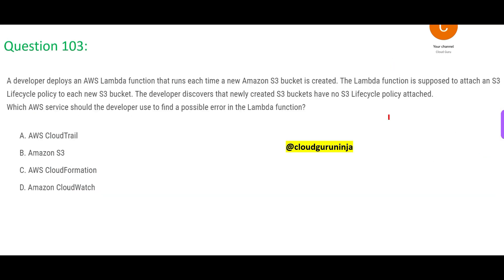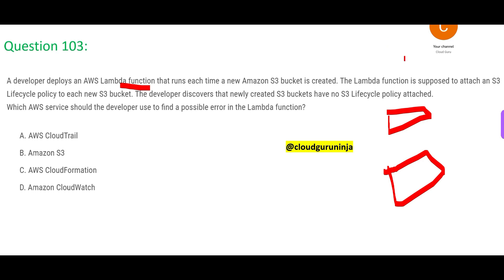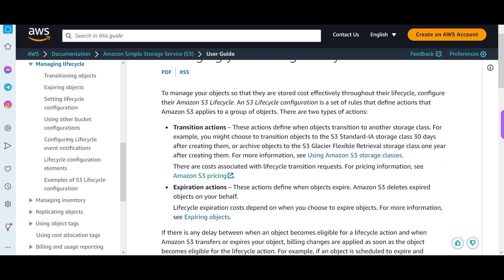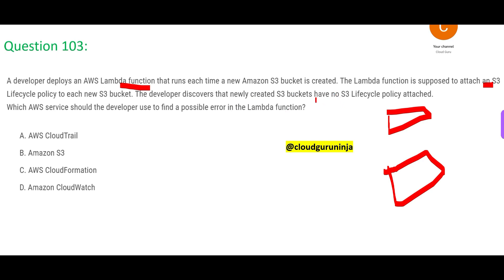This is the next question. You have AWS S3 buckets, and the moment you create an S3 bucket, a Lambda function is invoked each time. What the Lambda function does is attach an S3 lifecycle policy. The policy will transition objects from one storage class to another — for example, moving things to archive. But what they are seeing is the Lambda function is not attaching the policy. There are still S3 buckets with no lifecycle policy attached. Which AWS service should you use as a developer to find possible errors in the Lambda function?